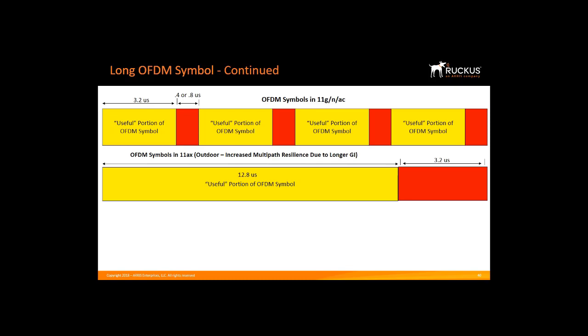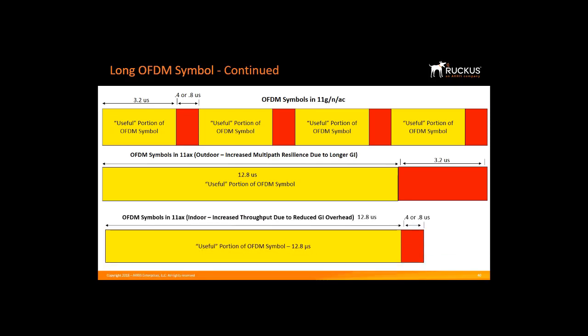How does this longer OFDM symbol affect indoor deployments? We know that indoors we don't need a long guard interval, so we combine the best of both worlds. We use the long OFDM symbol but keep the red portion short for indoor use. This decreases the overhead because we have a much longer yellow followed by a small red. Originally, we had 3.2 microseconds of data followed by 0.8 microseconds of overhead, representing a 20% overhead. Now we have 12.8 microseconds of data followed by a 0.8 microsecond guard interval in an indoor 11AX deployment, which means overhead has come down to less than 10%, giving a throughput benefit.